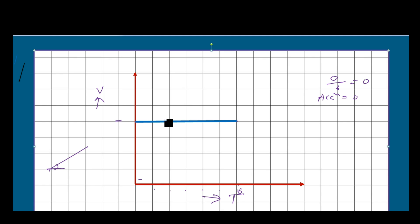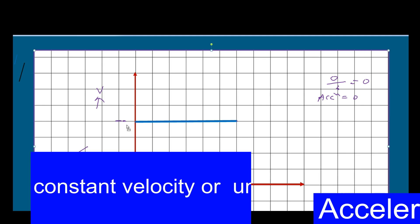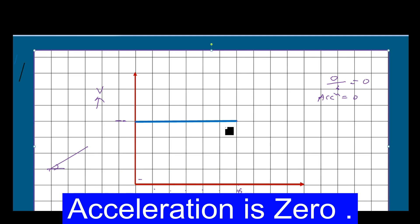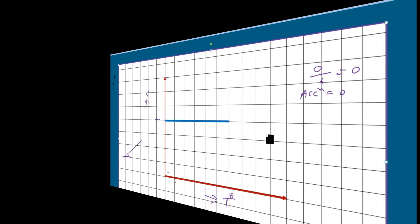If the curve is a straight horizontal line, the acceleration is zero. The object has an initial velocity, but the final velocity and initial velocity are the same, therefore the acceleration is zero.